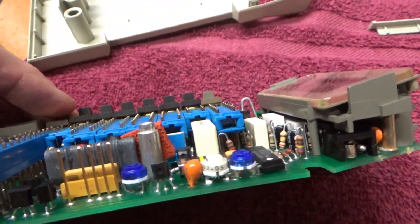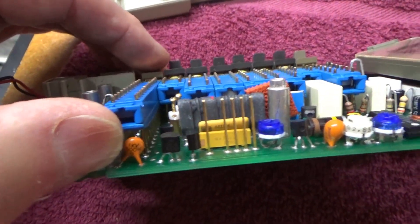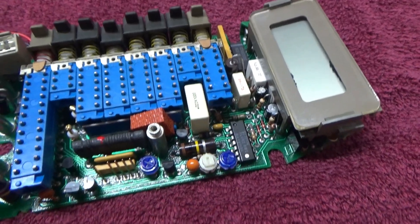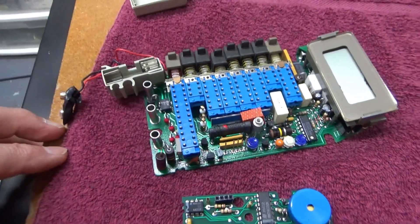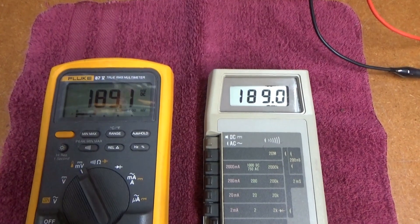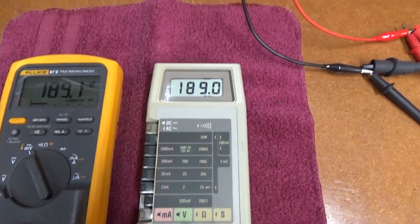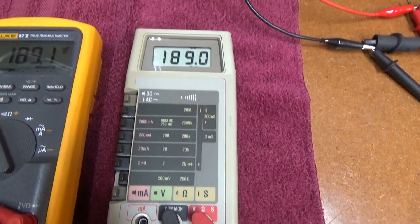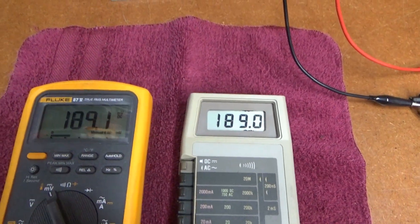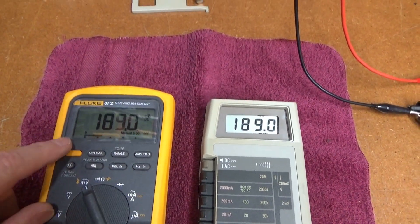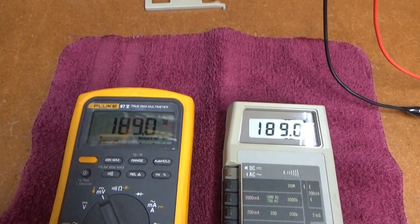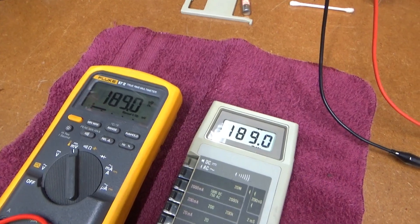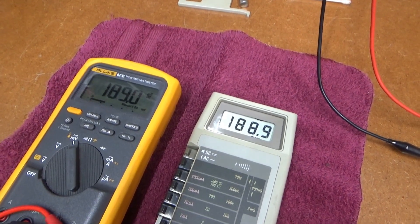Maybe I'll shoot these switches with a little DeoxIT just for good measure and then go ahead and put it back together. All right, I've got the old 8026B, and I have not touched the calibration on it. But here it is in comparison to my Fluke 87.5, and it's dead on, almost.